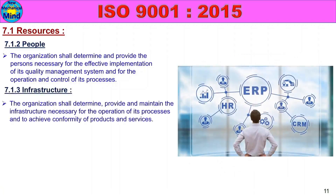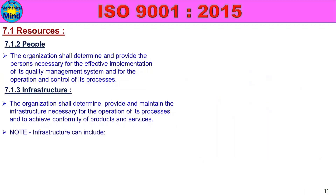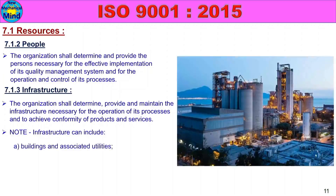7.1.3 Infrastructure: The organization shall determine, provide and maintain the infrastructure necessary for the operation of its processes and to achieve conformity of products and services. The company must decide what infrastructure is needed for their production processes and quality management activities.